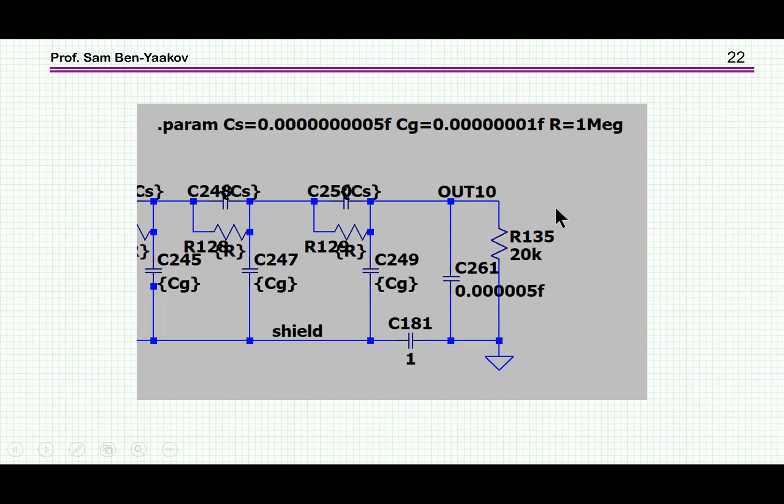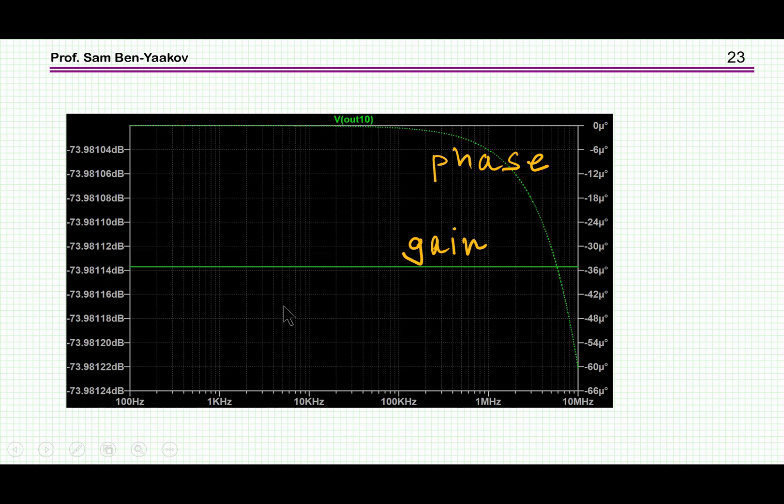So basically we have no capacitors here. All these parameters are in fact zero. And what we get is what we would expect. This is now purely resistive. We have about minus 74 dB attenuation, and then we have a phase shift that starts, but notice these are very small values here, these are micro degrees, so the breakpoint is probably at very high frequency. This is 10 megahertz here. So basically we have a flat response, as we would expect for a resistive network.